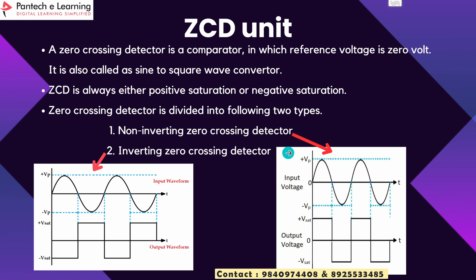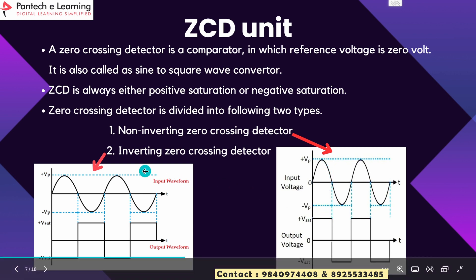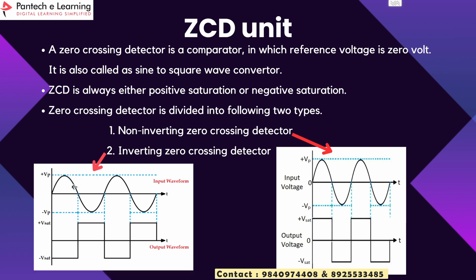Here we can see the difference between inverting and non-inverting ZCD. While in a positive cycle, we can see the difference clearly. For the inverting ZCD unit, the input sine wave is in positive cycle but at the same time the output voltage of ZCD is in negative cycle. For the non-inverting ZCD unit, when the input is in positive cycle, the output voltage is also in positive cycle. In this DVR project, Dynamic Voltage Restorer, we are using the inverting ZCD.